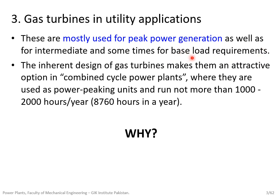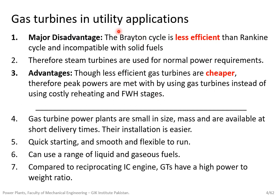Gas turbines are normally not used for baseload applications. The primary reason is that they are less efficient than the Rankine cycle and are incompatible with solid fuels. Their primary advantages are that they are cheaper due to small size and mass, and they are able to deliver power in a very short time — easier to install, quick to run, smooth and flexible. So for peak power demands, gas turbines are normally used.